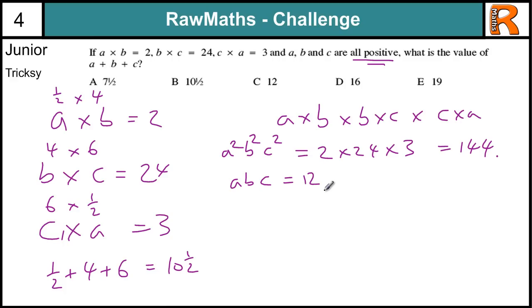So if abc equals 12, then we know a times b is 2, so 2 times c equals 12. So that means c equals 6 and once we have c equals 6 then we can work out that b equals 4 and then a equals 1.5 and we get the same answer as before, 10.5.